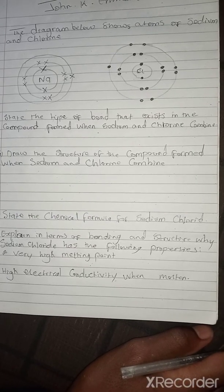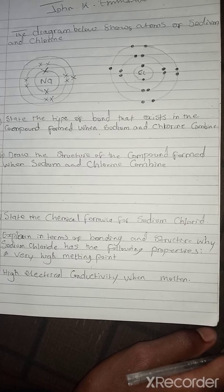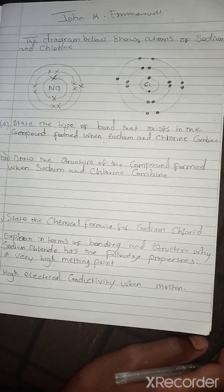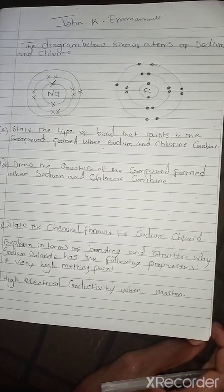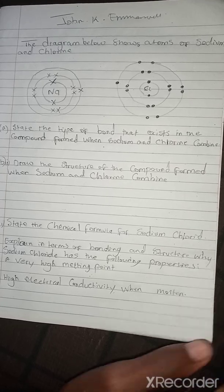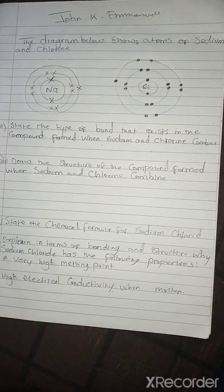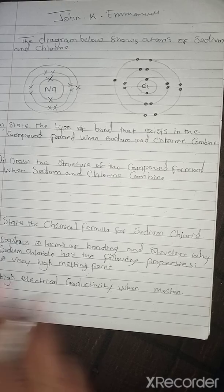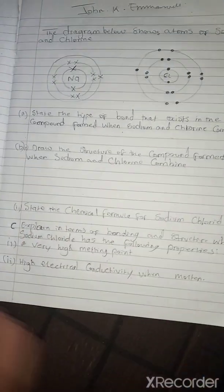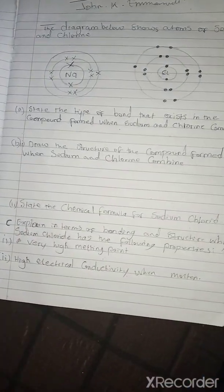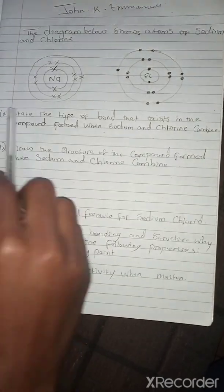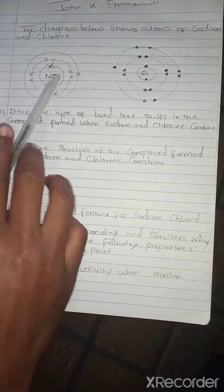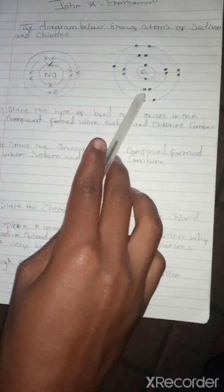Welcome guys to our YouTube channel. My name is John K Mwansa. In today's video we'll be answering a question from the past paper 2019 Science Paper 2. The question states that the diagram below shows atoms of sodium and chlorine — here we have the atom of sodium and here we have the atom of chlorine.